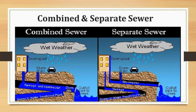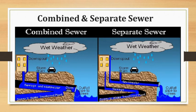Considering the pollutional aspect, in the water carriage system pollution problems are rare because liquid waste is directly conveyed through the sewer. In contrast, the conservancy system creates more pollution problems because waste is disposed of directly on the land, leading to contamination of the soil.